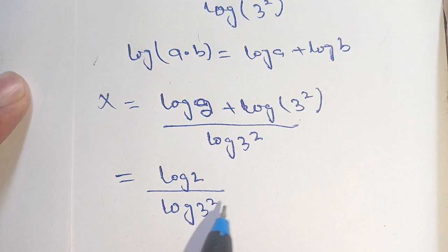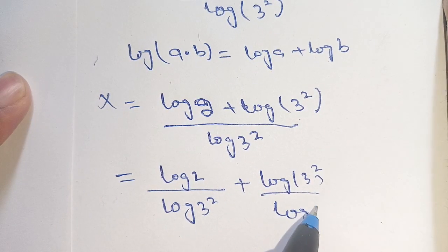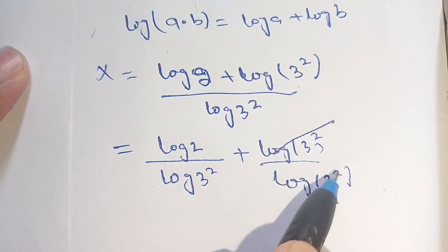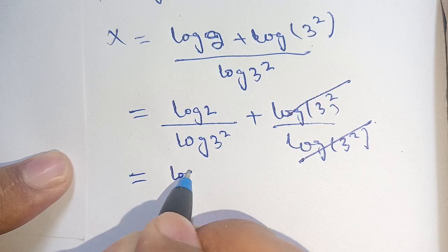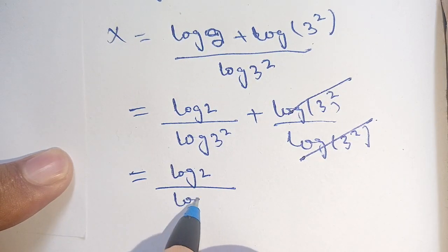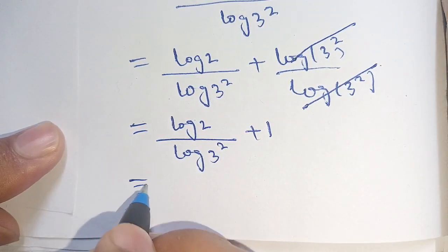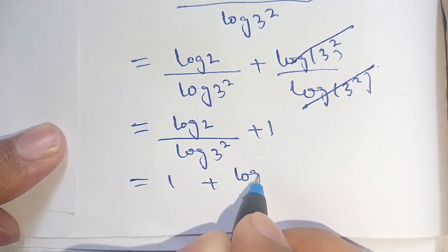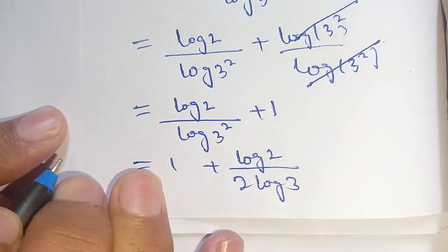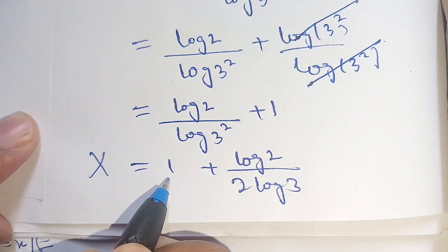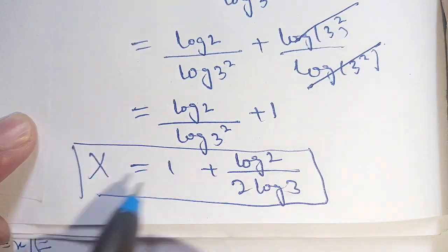We can cancel out log of 3 squared in the denominator, giving us log of 2 divided by log of 3 squared plus 1. We rewrite this as 1 plus log of 2 divided by log of 3 squared, where log of 3 squared equals 2 log of 3. Thus, x is equal to 1 plus log of 2 divided by 2 log of 3, which is the required value of x.